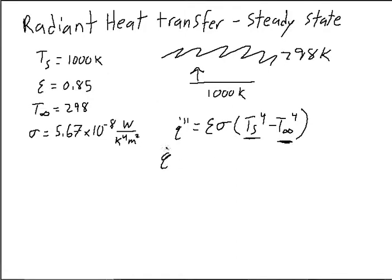So this Q dot double prime is equal to—we defined our emissivity as 0.85 for the purposes of this problem. Stefan-Boltzmann's constant is 5.67 approximately times 10 to the negative eighth watts per meter squared Kelvin to the fourth.